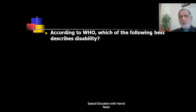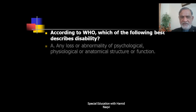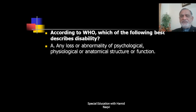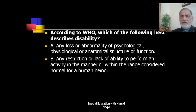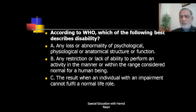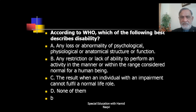Next question: According to the World Health Organization (WHO), which best describes disability? Options: A) any loss or abnormality of psychological, physiological, and anatomical structure or function; B) any restriction or lack of ability to perform an activity in the manner or within the range considered normal for a human being; C) the result when an individual with an impairment cannot fulfill a normal role. The correct answer is B.